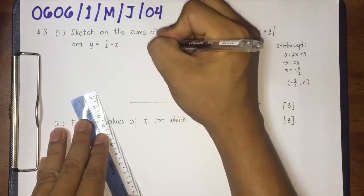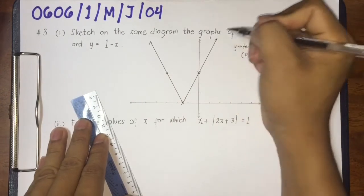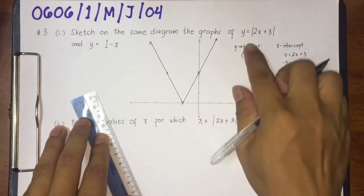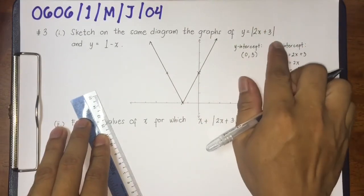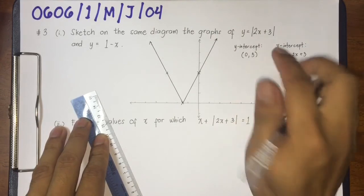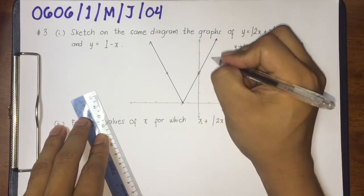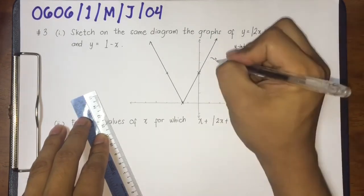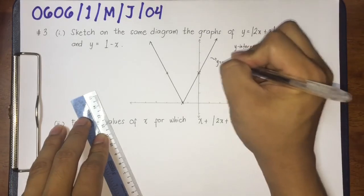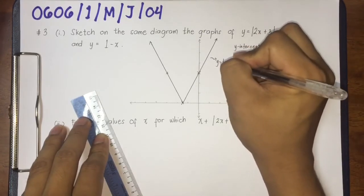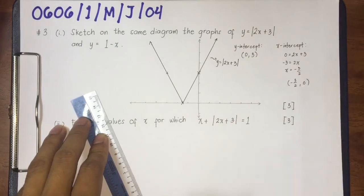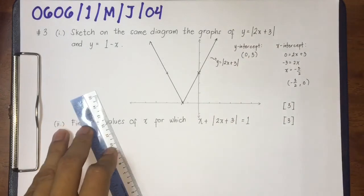This is now the graph of y equals the modulus of 2x plus 3. It's very important that we label the graph y equals the modulus of 2x plus 3.